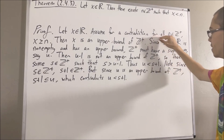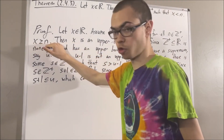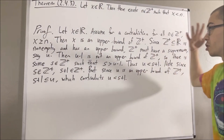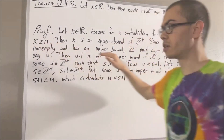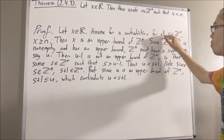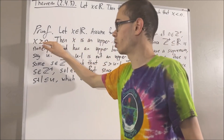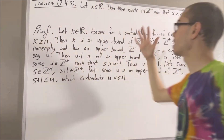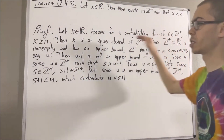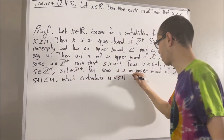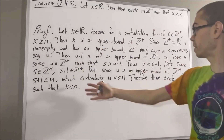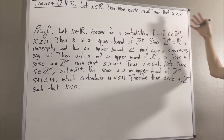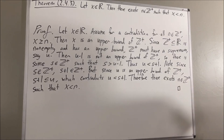So, our assumption led us to a contradiction. We must instead have that it is false that for all positive integers n, x is greater than or equal to n. We must instead have that there exists a positive integer n such that x is less than n. And that is exactly what we wanted to prove. So, this completes the proof. And that's pretty much it for this video.